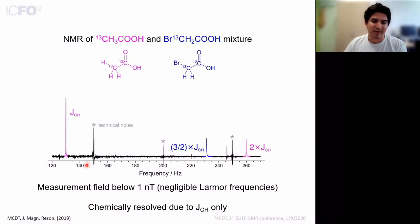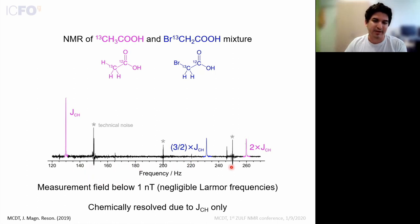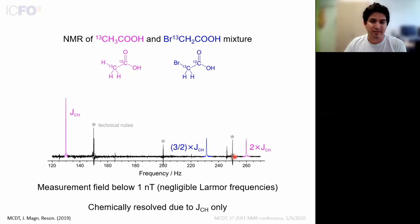This is the spectrum of the same sample at a very low magnetic field of one nanotesla — a billion times less field — where the Larmor frequencies are below about 10 or 20 millihertz. This is an NMR spectrum very different to what we're used to in high field. We see no carbon-13 or hydrogen region, only a couple of peaks per molecule. Those peaks occur at multiples of the carbon-hydrogen scalar coupling, not chemical shifts. But still, this is enough information for chemical resolution.